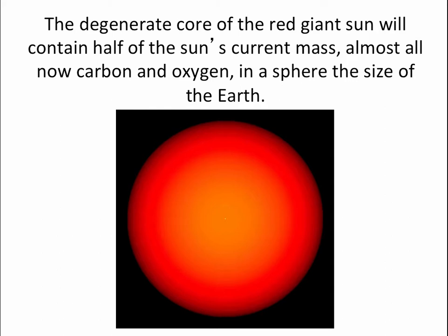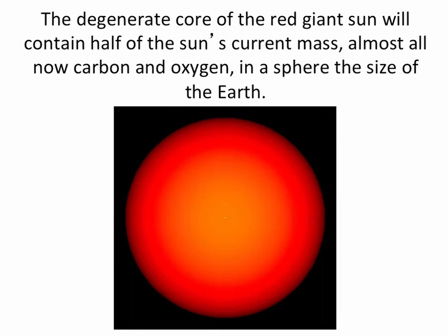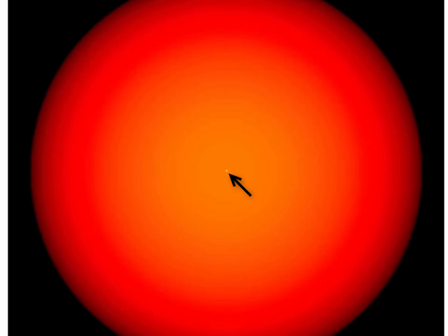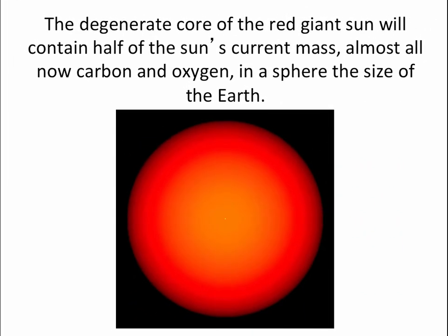This degenerate core of the sun, carbon and oxygen, it will contain half of the sun's total mass, half the sun's current mass, but it's going to be squeezed by gravity into something about the size of the Earth. Meanwhile, the remaining half of the sun is in this red giant that reaches out to beyond the orbit of the Earth. So half the sun's mass is in this little tiny white dot. You may not even be able to see it after this video has been rendered. This is not a stable situation.